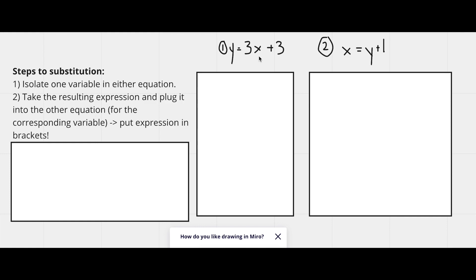Take the resulting expression. So any resulting expression of an isolated variable. So we have y right here, which is isolated, and the resulting expression would be 3x plus 3.